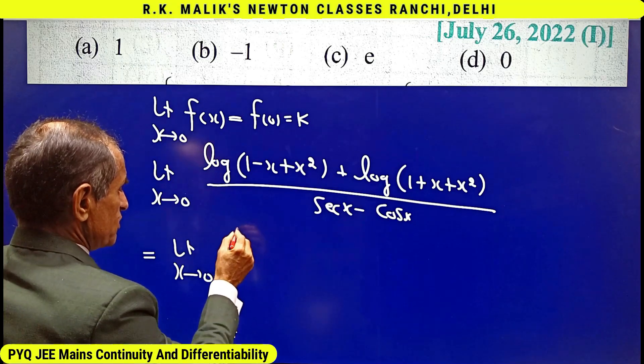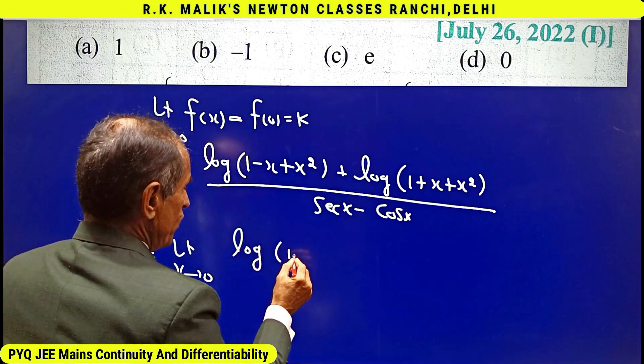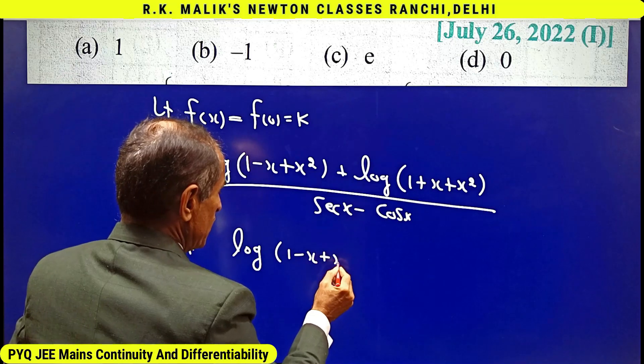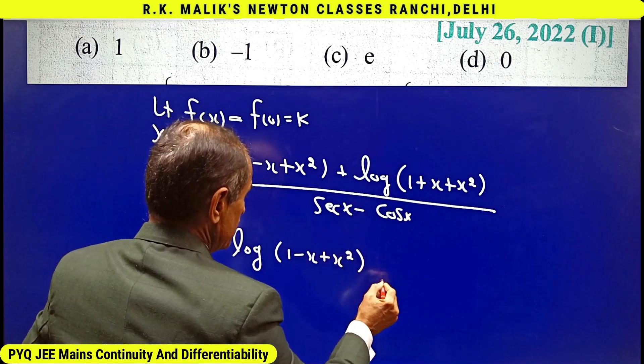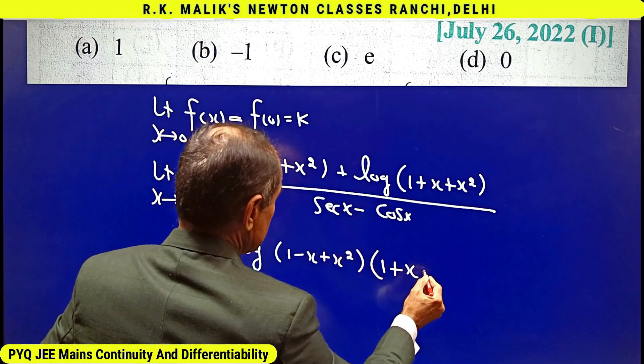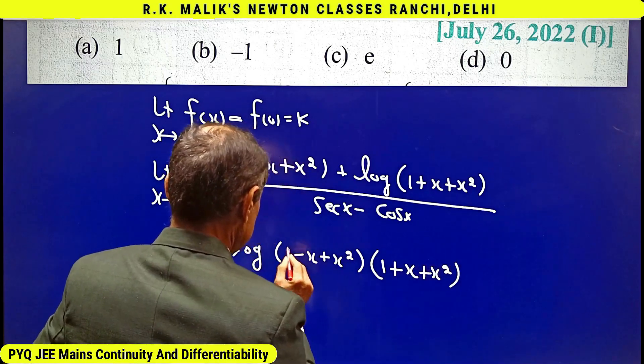So it's clearly log of [(1 - x + x²) times (1 + x + x²)].